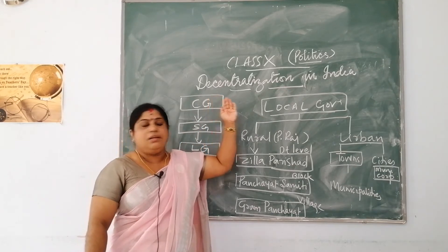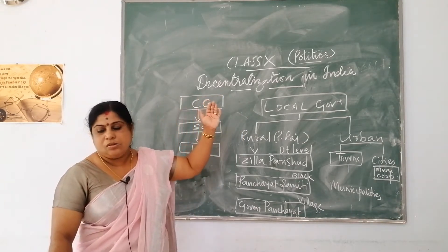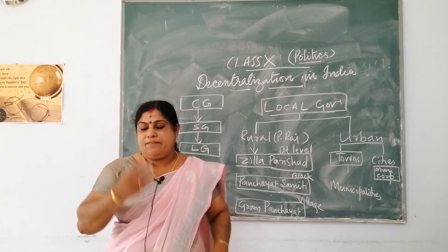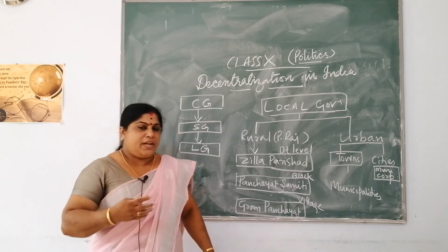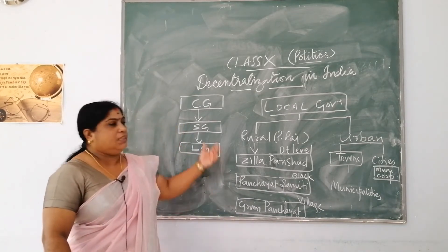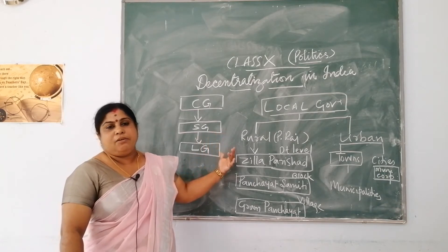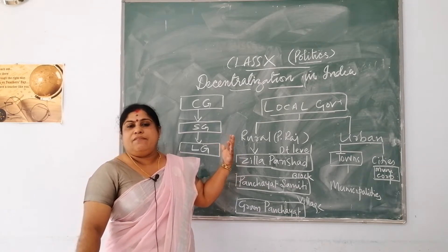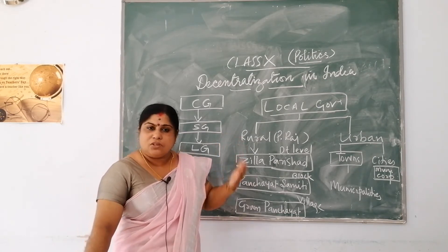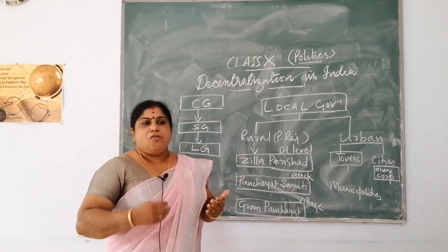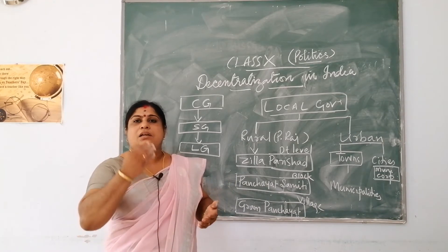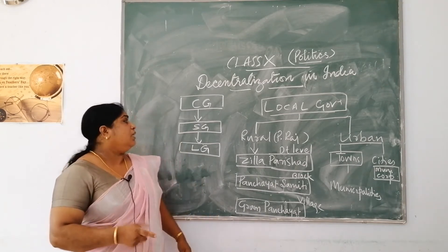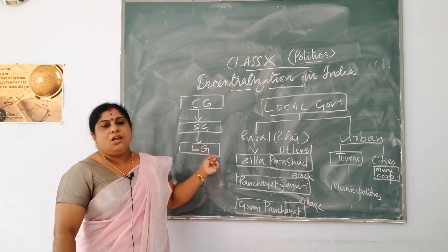Listen carefully to the topic and read your text also. Now, India is having a diverse population, and because of that diverse population we have a three-tier level of government. In smaller classes you learned the different levels of government as well as the organs of government. Organs of government are legislature, executive, and judiciary. Levels of government are central government, state government, and local government.